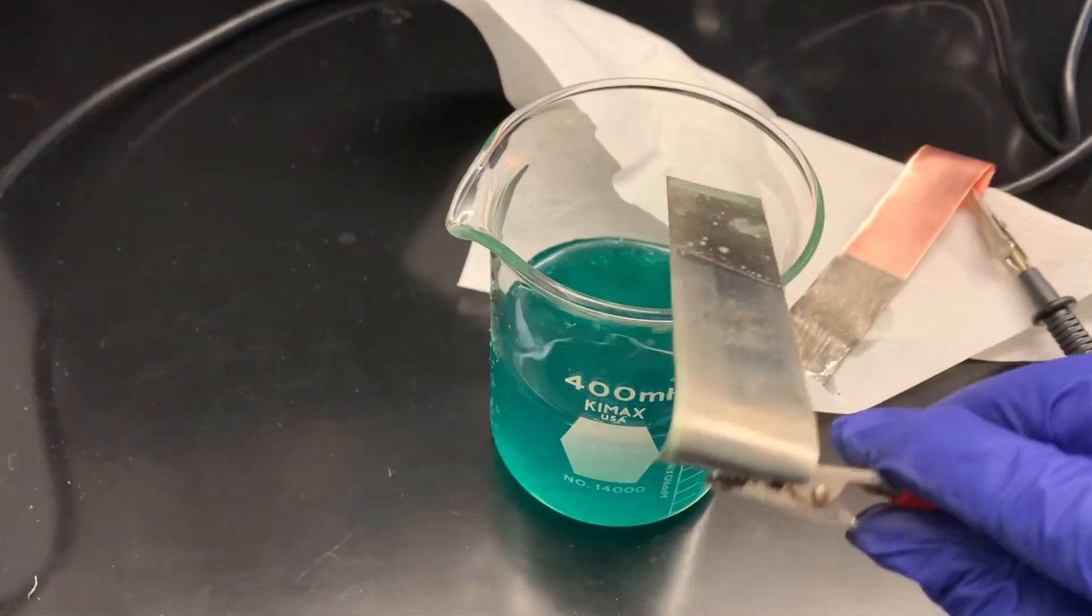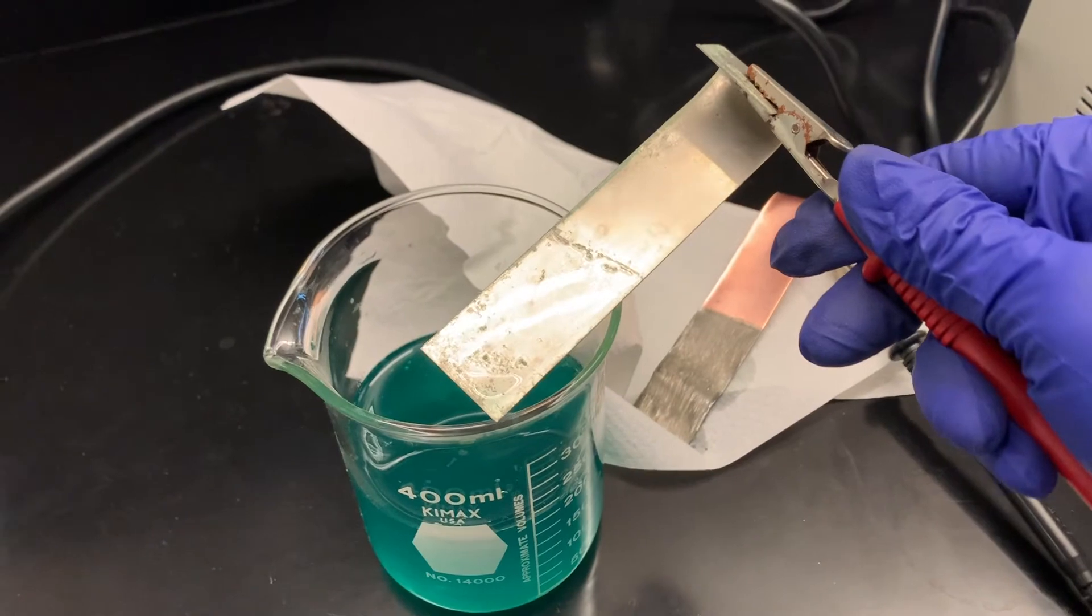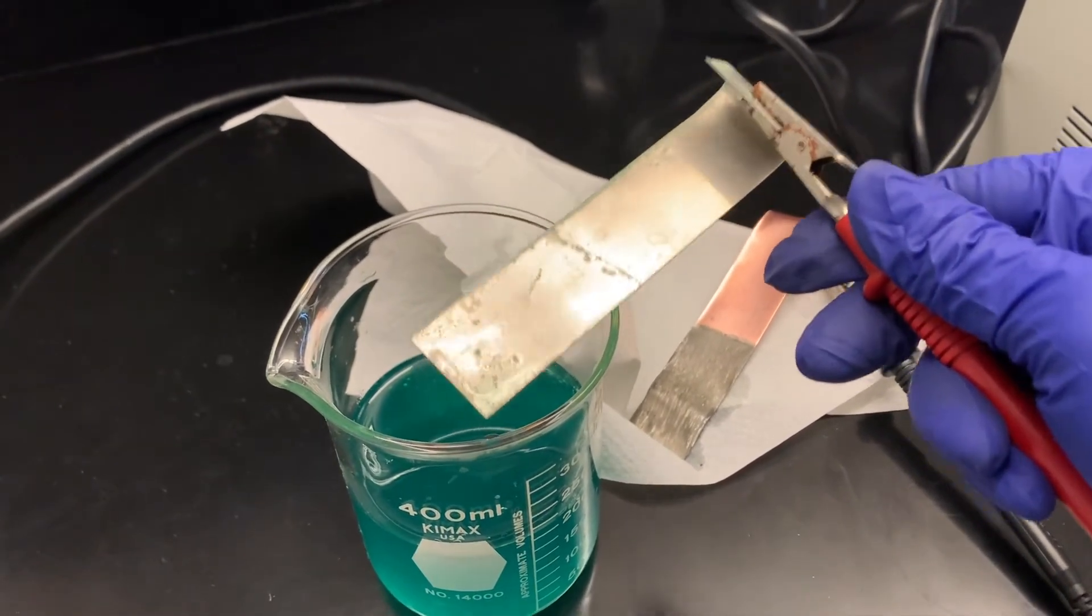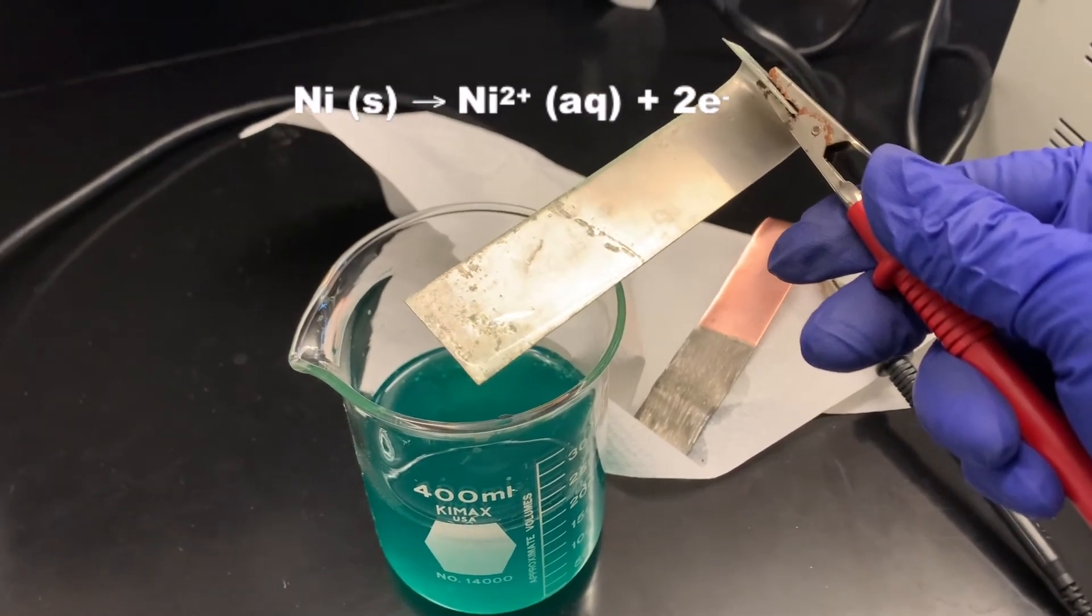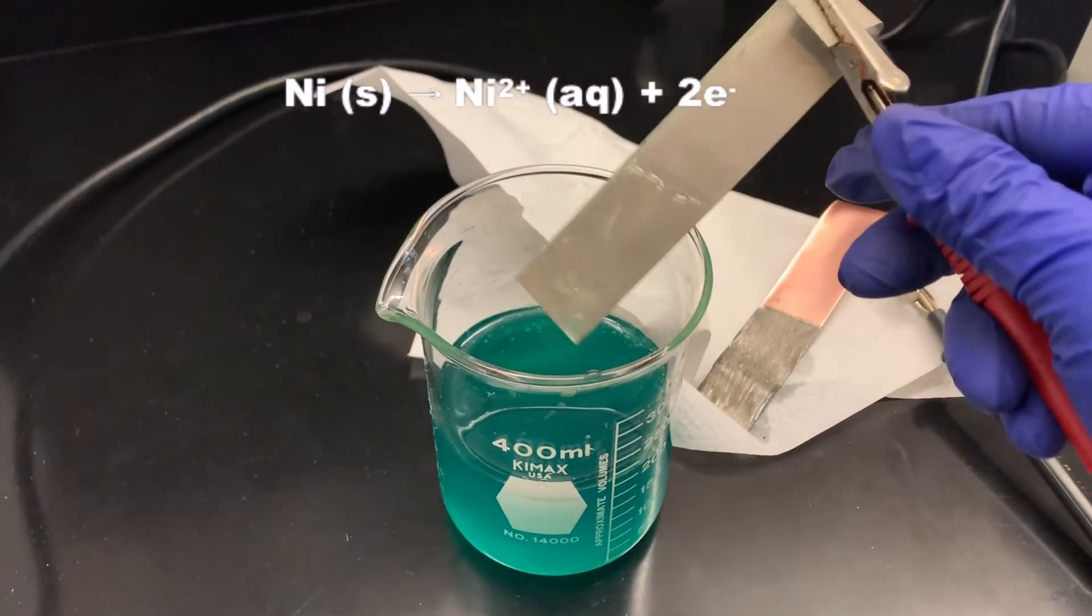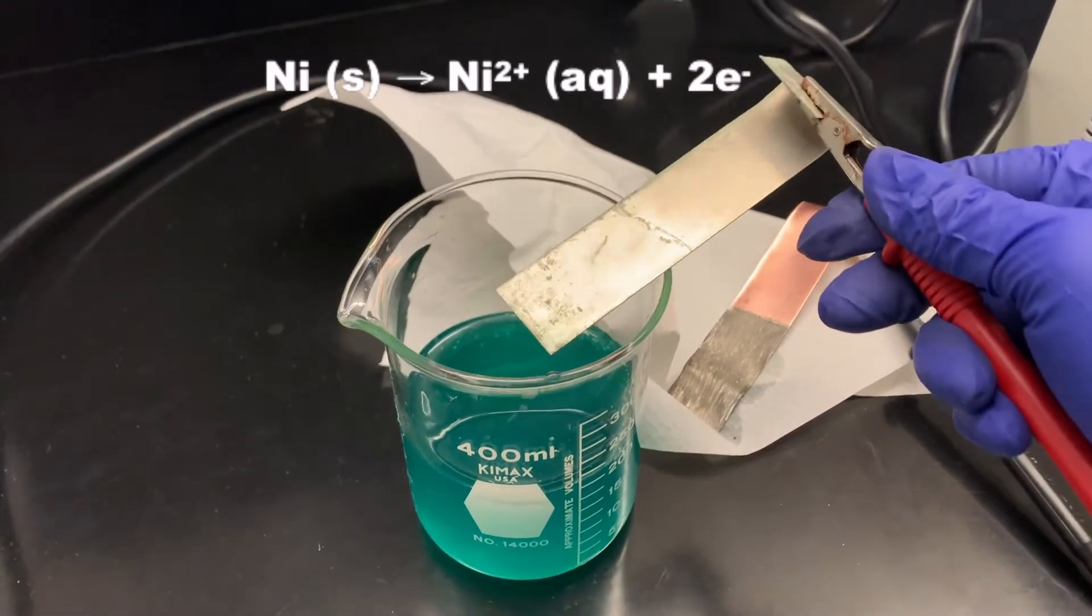This one shouldn't look much different. I could have measured the mass. The lab doesn't call for it, but if I measured the mass of this before and after, it lost some mass. The nickel is the anode, so it's being oxidized. The nickel solid is going to nickel 2 plus plus electrons, so that's why it loses mass.